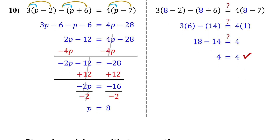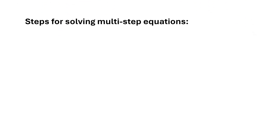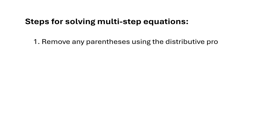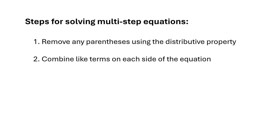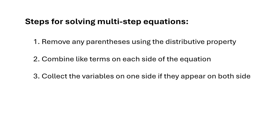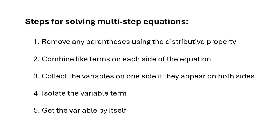Here's a quick recap of the steps for solving multi-step equations. First, remove any parentheses using the distributive property. Next, combine like terms on each side of the equation. Then, collect the variables on one side if they appear on both sides. After that, isolate the variable term. Finally, get the variable by itself.